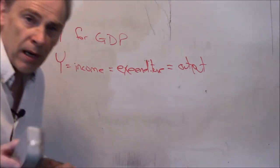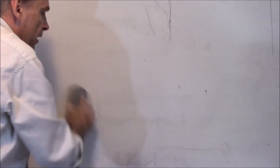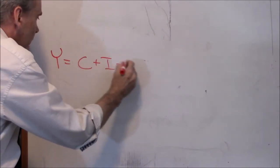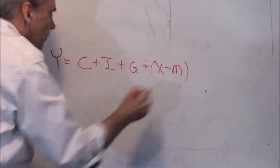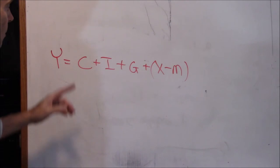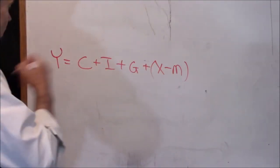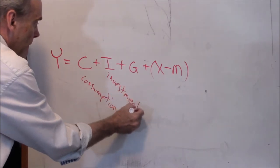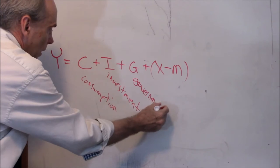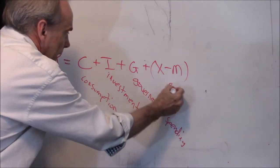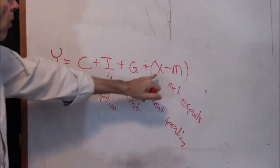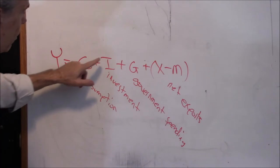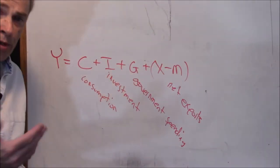But wait, there's more. Let's think about it as expenditure for a moment. The way we calculate expenditures, the way we define GDP, is that it's composed of four different kinds of expenditures: consumption, investment, government spending, and net exports — how much we sold minus how much we bought. So that's how we calculate GDP every year: consumption plus investment plus government plus net exports.